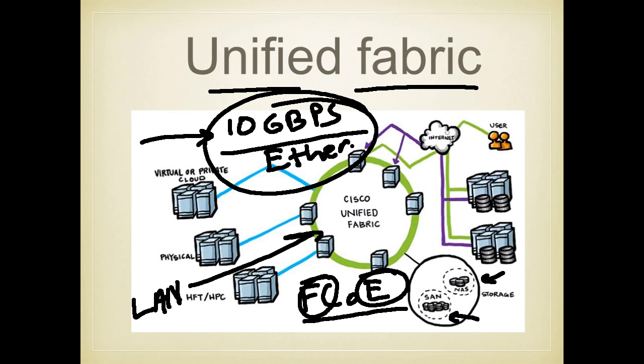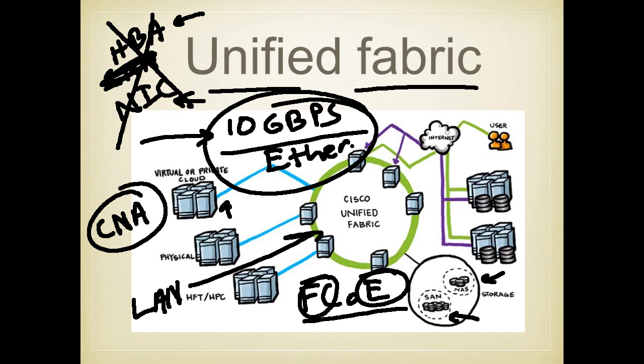On servers, you no longer need to provision a converged network adapter for the fiber channel stuff, and a host bus adapter. You no longer have to provision a host bus adapter for the fiber channel and a NIC for the LAN. Instead, you get rid of these two entities, and you provision a converged network adapter that can speak both the LAN traffic and the SAN traffic seamlessly.